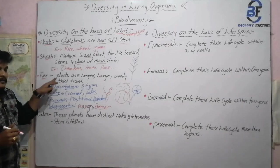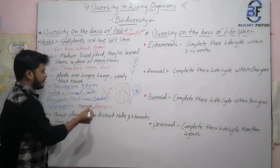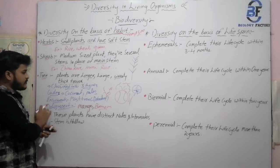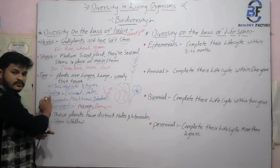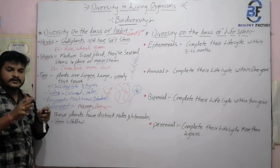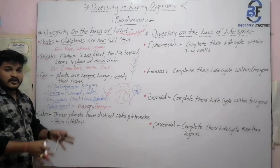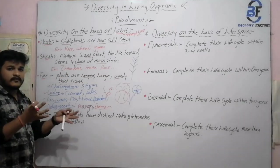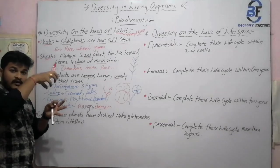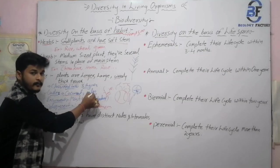To summarize the tree category: these plants are large, long, woody, and have a thick trunk, and they are classified into three types. In caudex, the branches and leaves are present on the top crown of the plant, with coconut and palm as examples. In excurrent, the branches are arranged in an axial manner from bottom to top, with leaves and branches in a certain order.